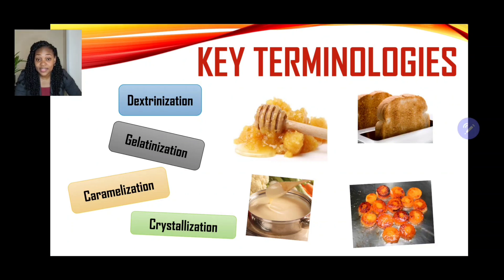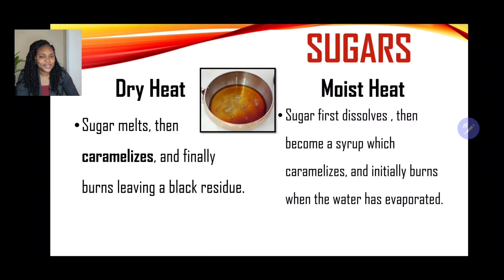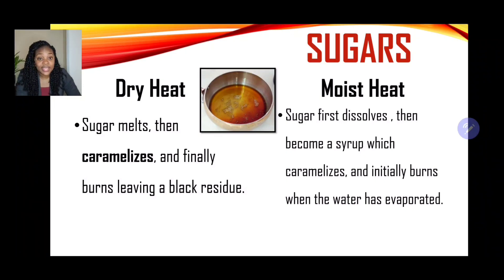Now we're going to look at the effects of dry heat and moist heat on sugars and starch, which are both carbohydrates. With dry heat applied to sugar, the sugar melts, then caramelizes, and finally burns leaving a black residue. With moist heat, sugar first dissolves, then becomes a syrup which caramelizes, and eventually burns when the water has evaporated.